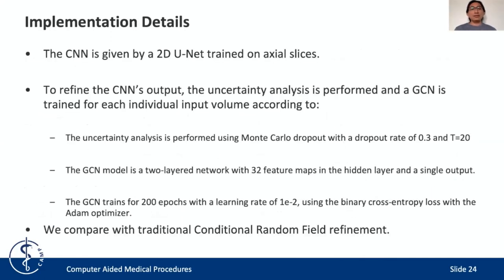We test our framework on a two-dimensional U-Net trained on axial slices. We perform the uncertainty analysis as described, using a dropout rate of 0.3 and considering 20 samples. The GCN model is a two-layer network with 32 features in the hidden layer and one single output. We train the GCN for 200 epochs with a learning rate of 1e-2, using the binary cross-entropy loss with the Adam optimizer, and we compare our results with the traditional conditional random field refinement strategy.